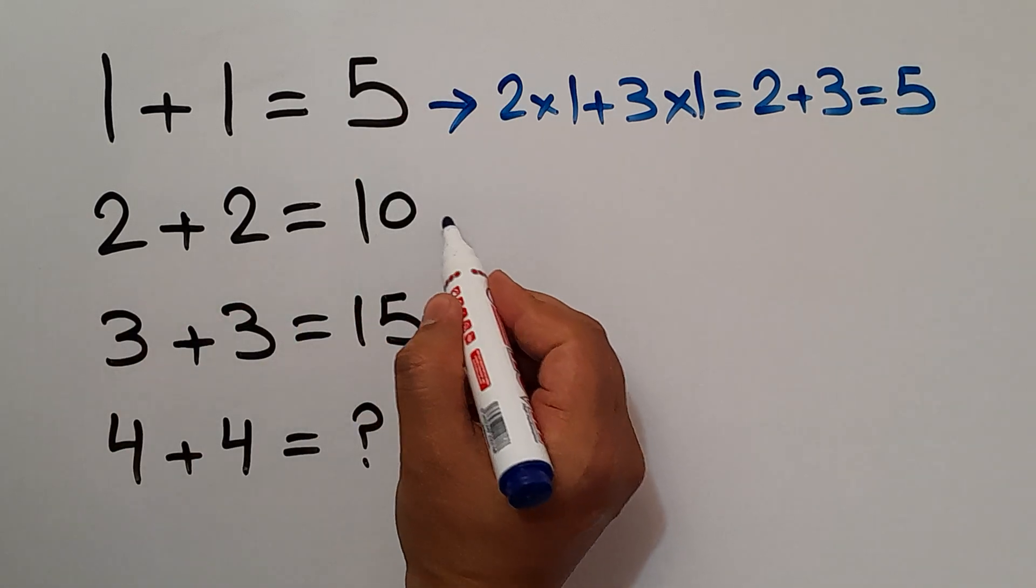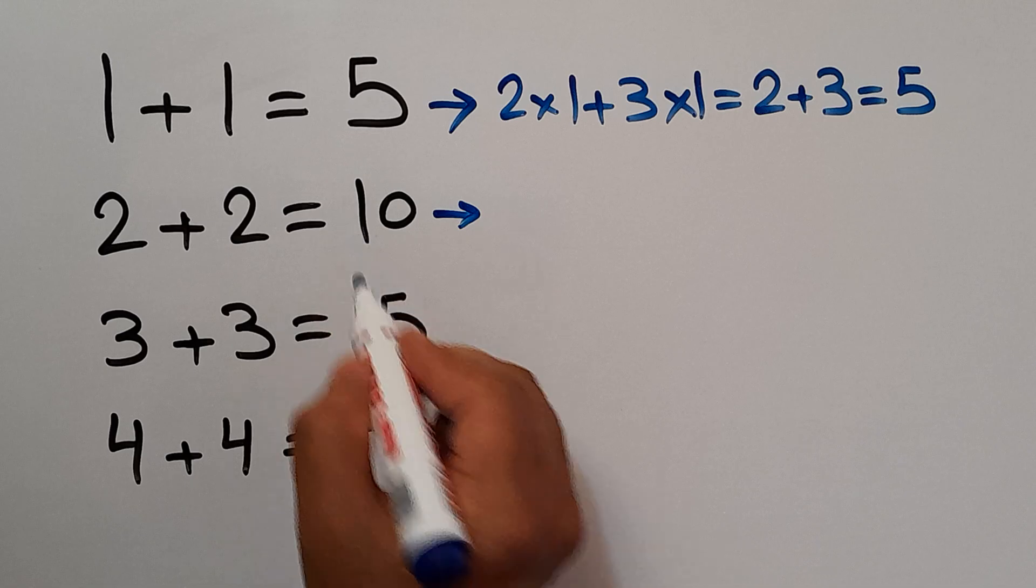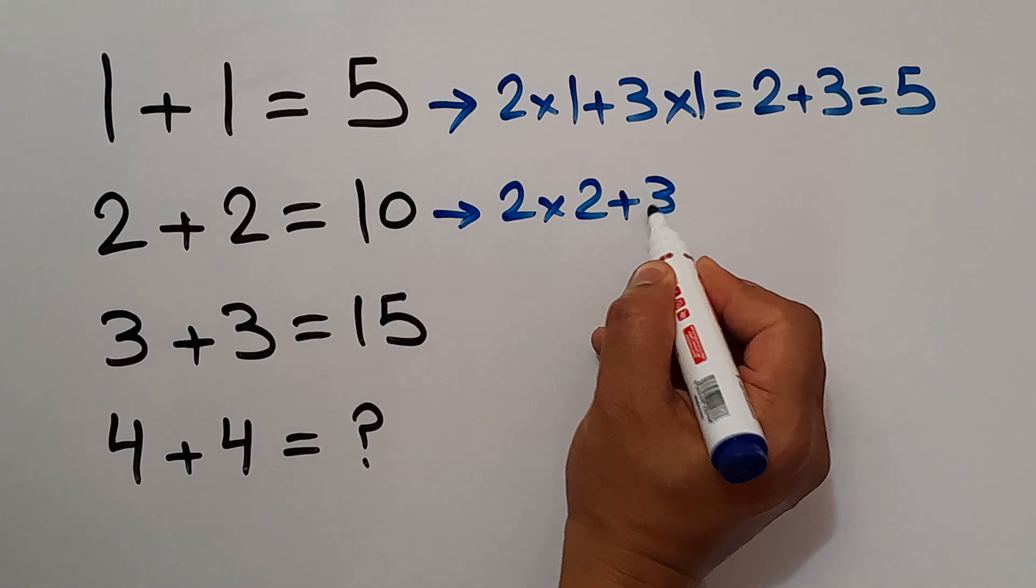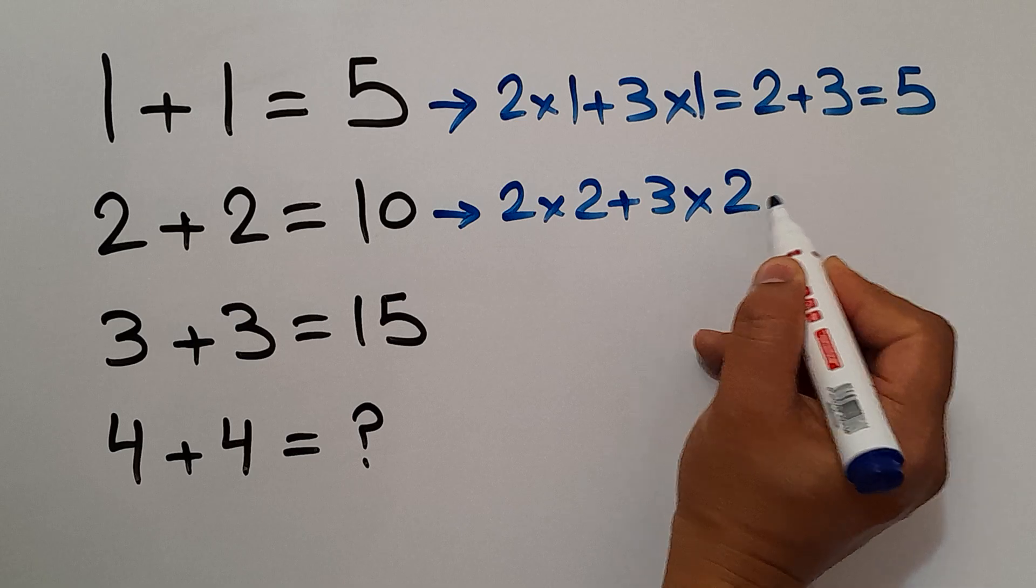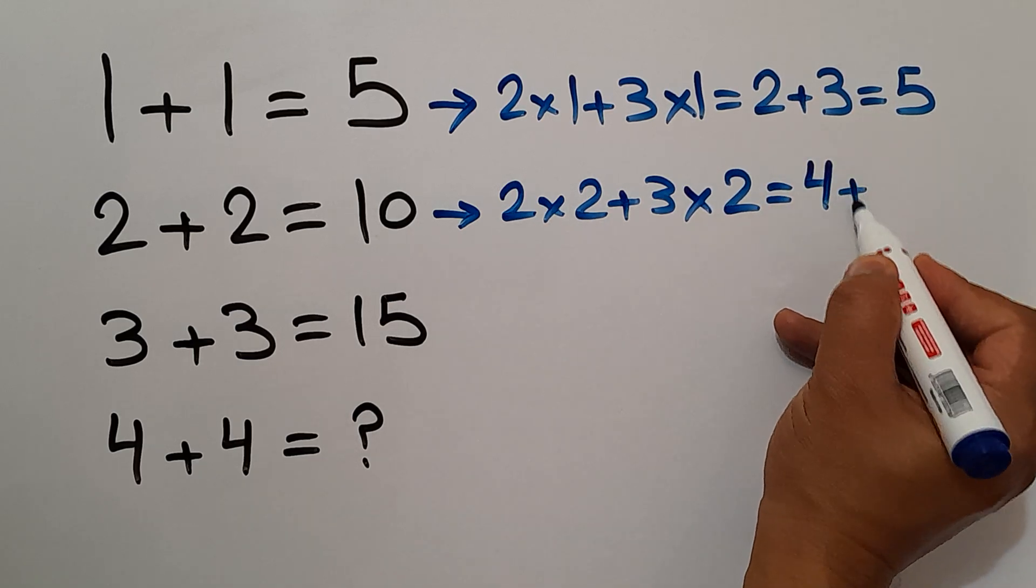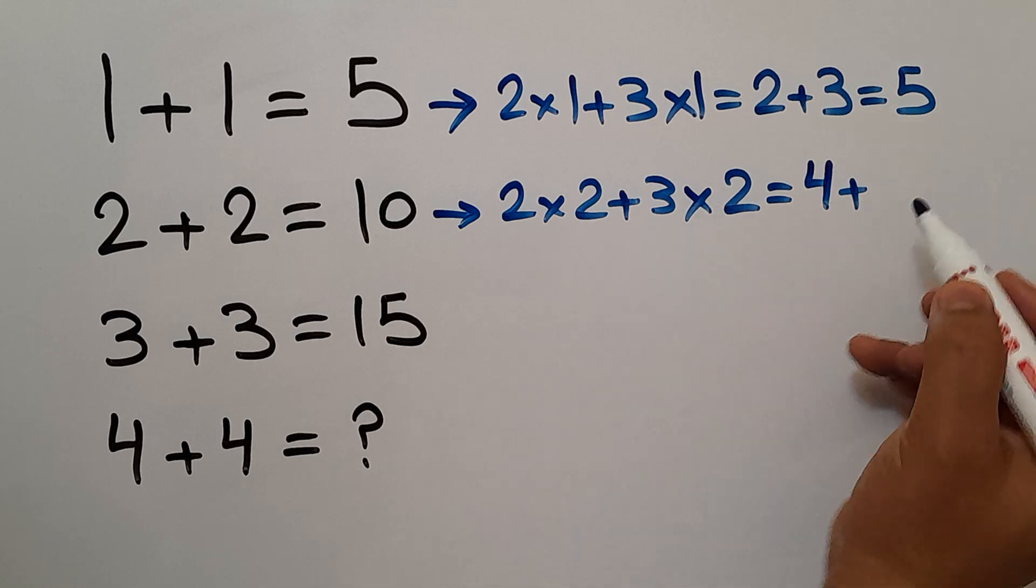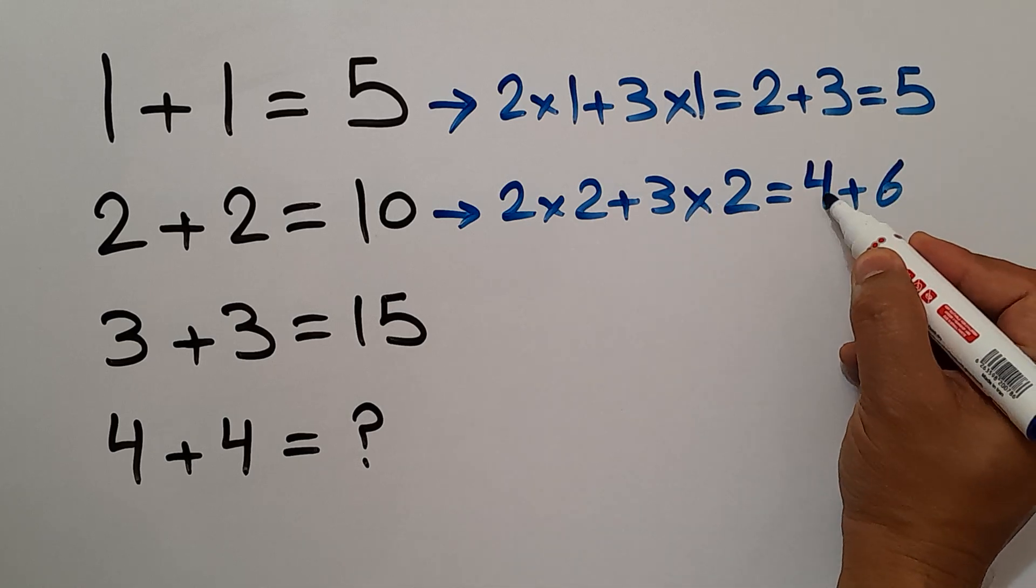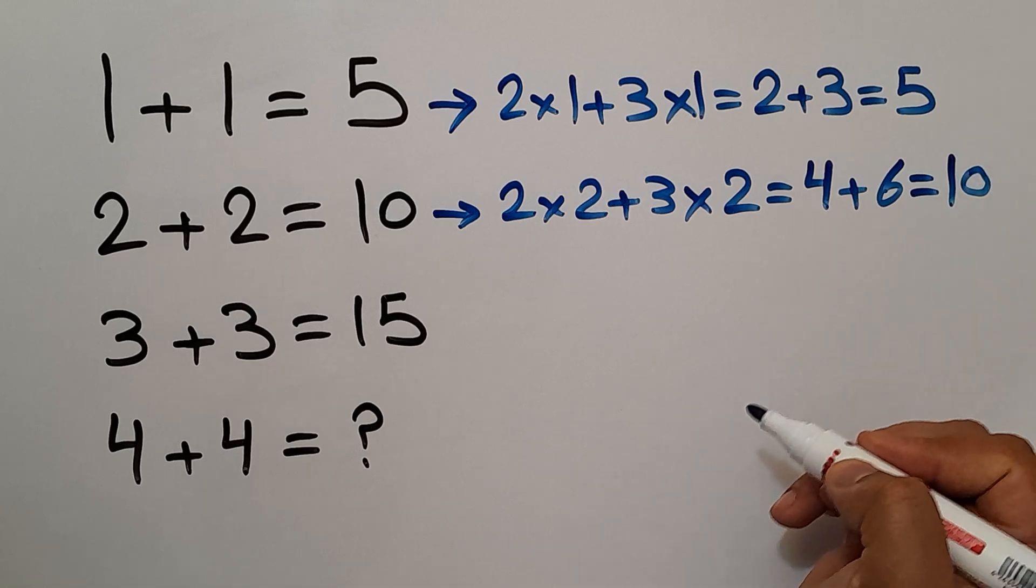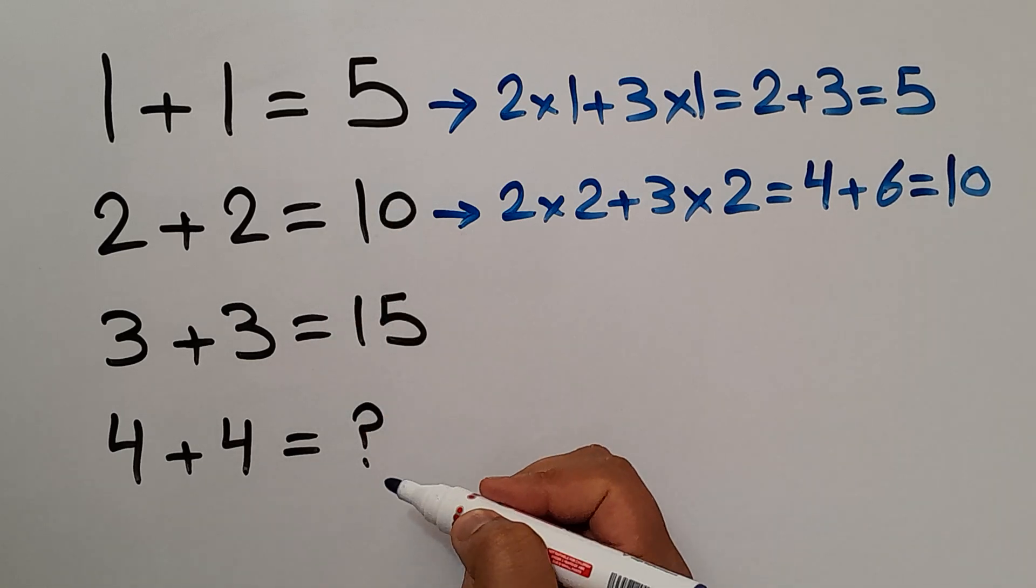In the second line, we have 2, 2, and 10. 2 times 2 plus 3 times 2 will be equal to... 2 times 2 is 4, so 4 plus 3 times 2, which equals 6. And 4 plus 6 gives us 10, the right-hand side number.